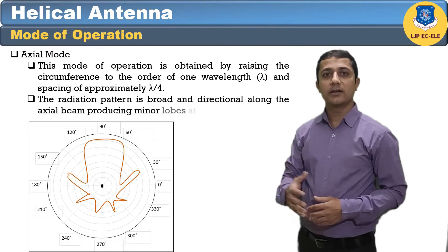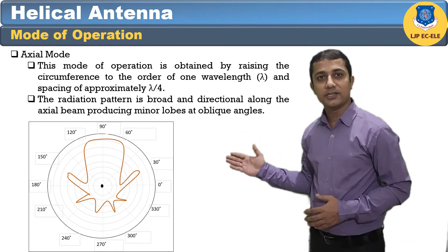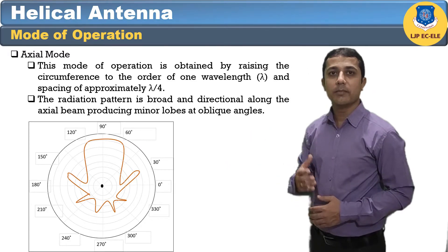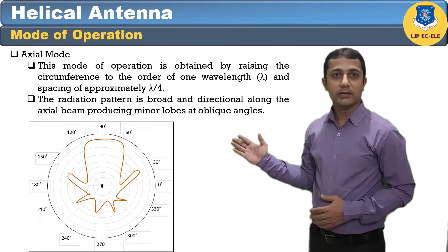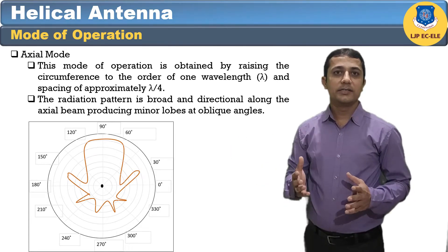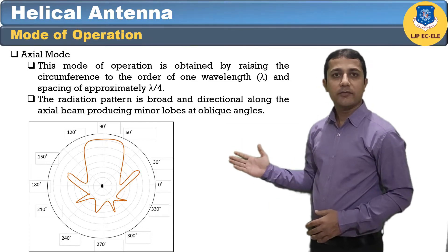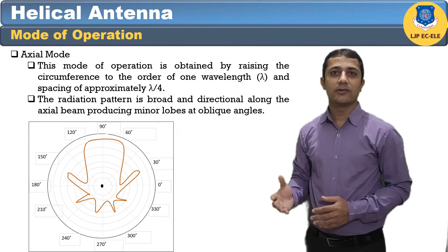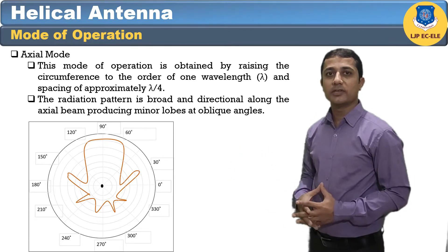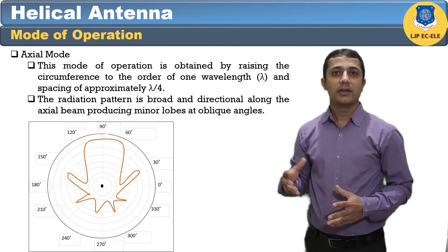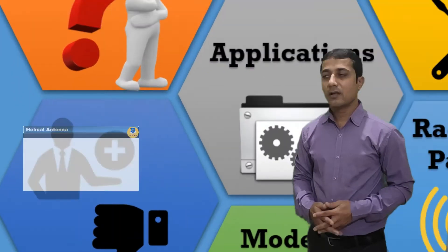The radiation pattern is broad and directional along the axial beam, producing minor lobes at oblique angles. If the antenna is designed for right-handed circularly polarized waves, it will not receive left-handed circularly polarized waves and vice versa. This mode of operation is achieved with great ease and is more practically used.